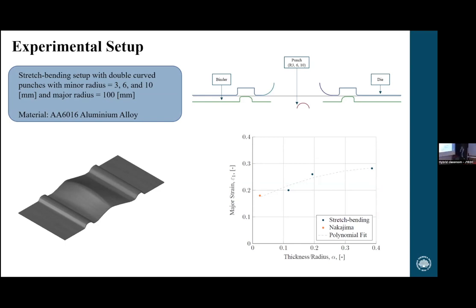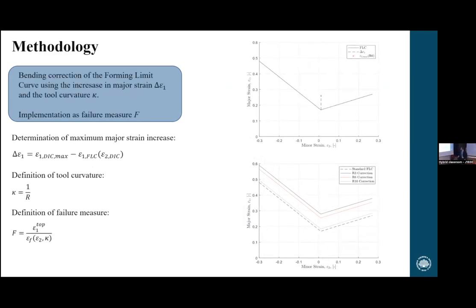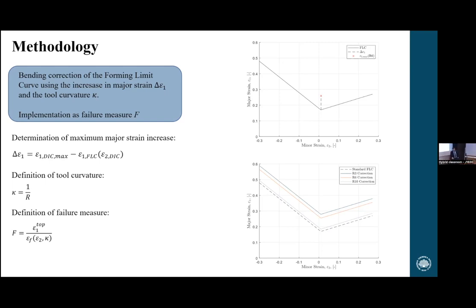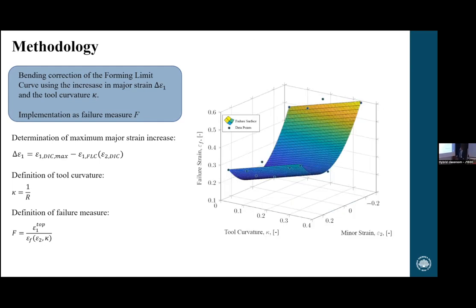So how can we account for this in the forming limit diagram? Building on the hypothesis of a bending correction, I identified a delta ε₁ value — the distance from the failure strain value down to the forming limit curve — and performed a constant offset of the entire curve, lifting it. The result shows the standard forming limit curve, plus offset curves for R10, R6, and R3 tests. To distinguish between when to use these curves, I introduced the tool curvature kappa, turning the 2D forming limit diagram into a 3D forming limit space.